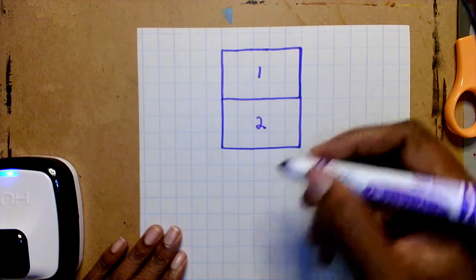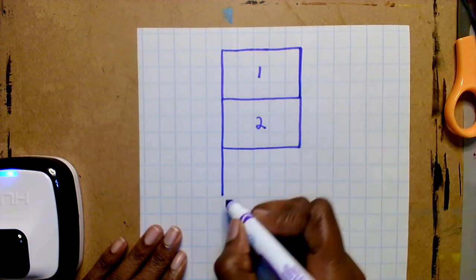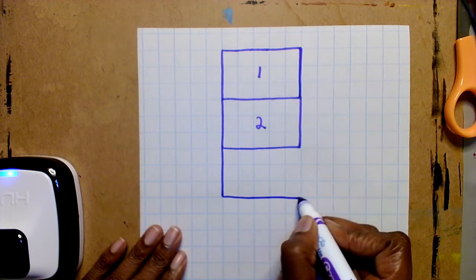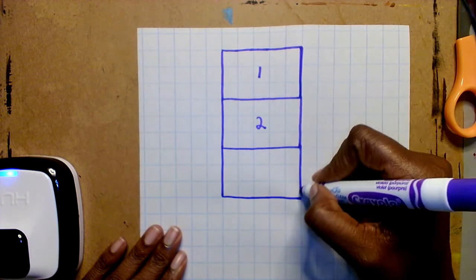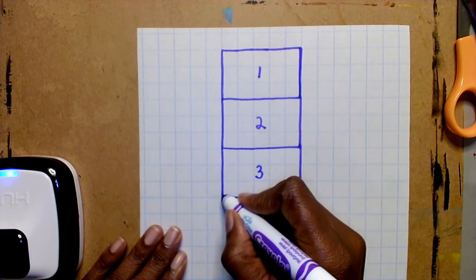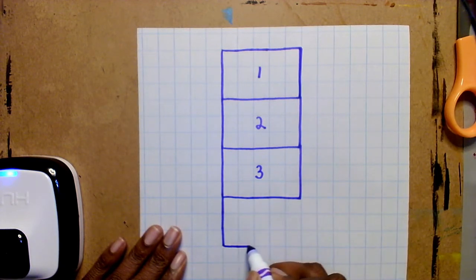Number three the same thing. Three going down, two, three, five going across, two, three, four, five. Number four follows the same pattern, one, two, three going down, one, two, three, four, five across.